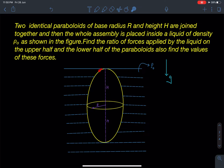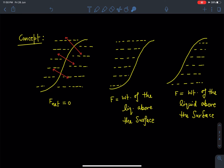As you can see in the diagram, there are two paraboloids joined together and this entire assembly is placed just inside the water or some other liquid of density ρ₀. Gravity is uniform with value g. Let's now discuss the concept part.